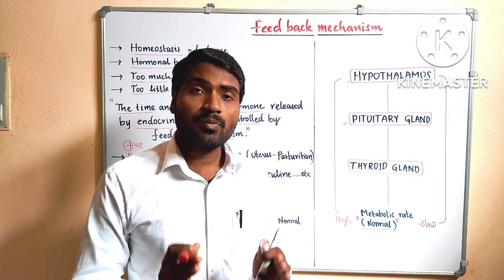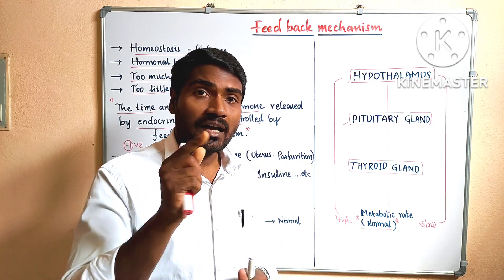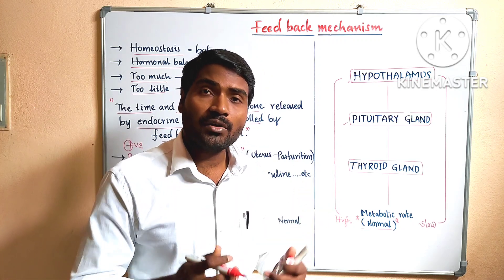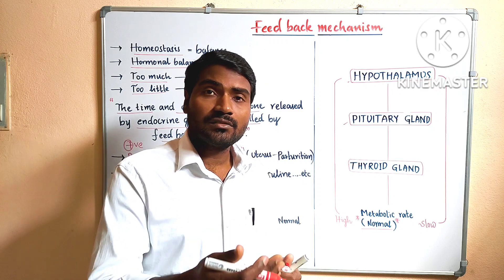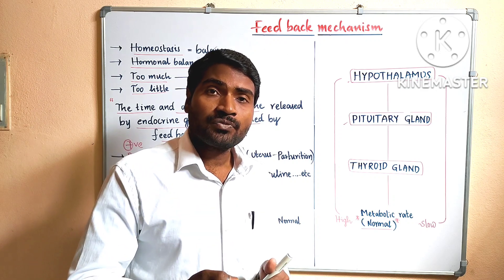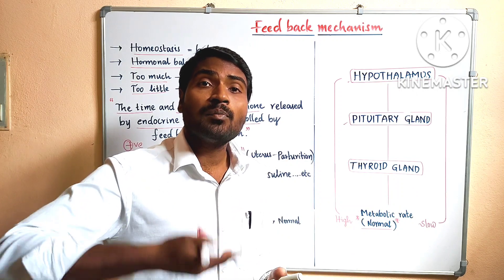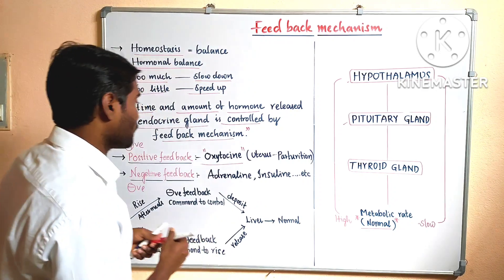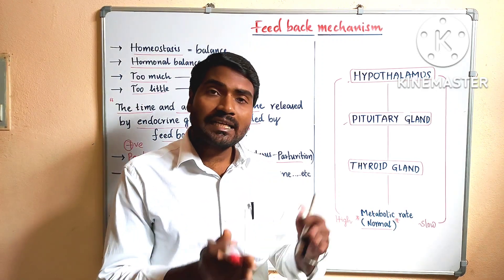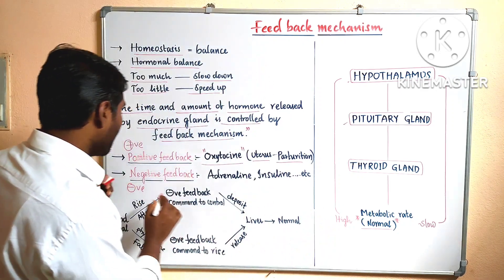We can see this type of positive feedback mechanism in the case of oxytocin hormone. During childbirth — parturition — a hormone is released from the pituitary gland of the mother, called oxytocin. Once oxytocin is released, it goes to the uterus and stimulates the muscles of the uterus to contract. The uterus walls start contraction and relaxation, and the mother gets labor pains. Once a small contraction starts, the oxytocin again stimulates the hypothalamus to produce this hormone again and again, more and more. This is called positive feedback mechanism. We can see this type of mechanism at the uterus during parturition.